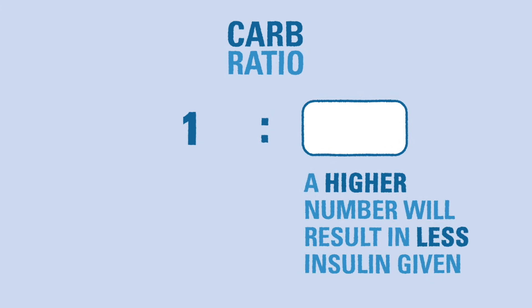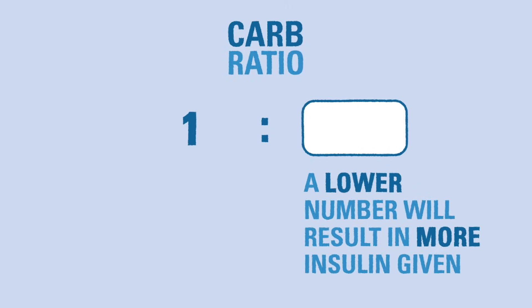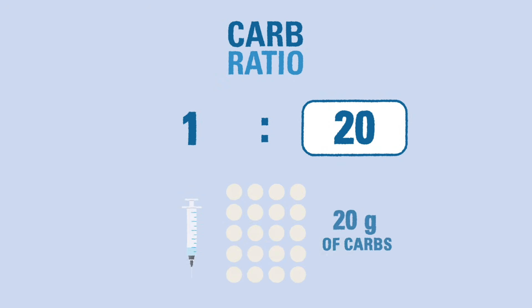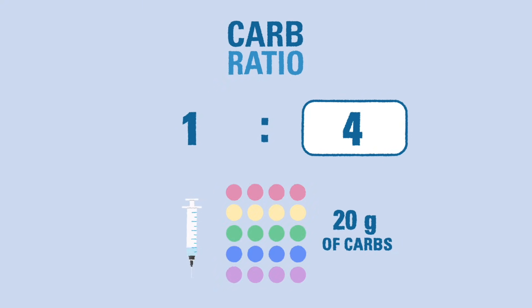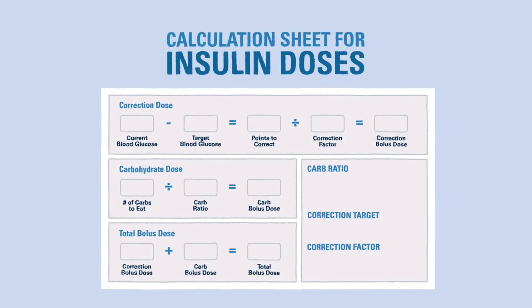It is important to point out that the ICR is a ratio. This means a higher carb ratio will deliver less insulin, and a lower carb ratio will deliver more insulin. For example, a carb ratio of 1 to 20 means you give one unit for a snack with 20 grams of carbs, while a carb ratio of 1 to 4 means you would need to give 5 units for the same snack. We'll go over the math and use the calculation sheet for insulin doses in the next video.